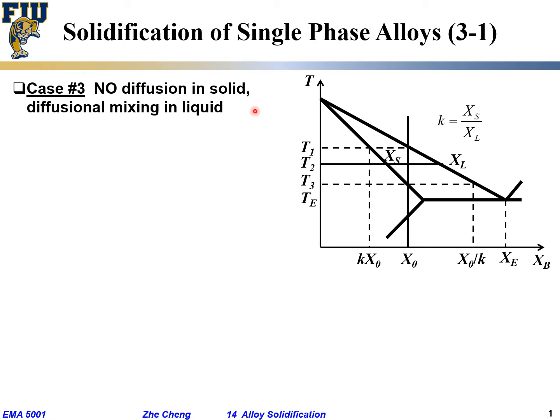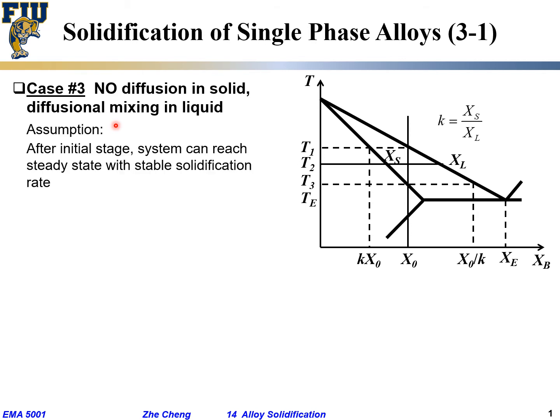Now we are not only assuming no diffusion in solid — very, very slow diffusion — but we are also not doing stirring within the liquid. If we are not doing stirring within the liquid, there will be some so-called diffusional mixing. When you are not doing stirring within the liquid, the liquid composition will change. We are dealing with an alloy, a system that has changing composition. There will be diffusion mixing in liquid. So in this case, we have these assumptions.